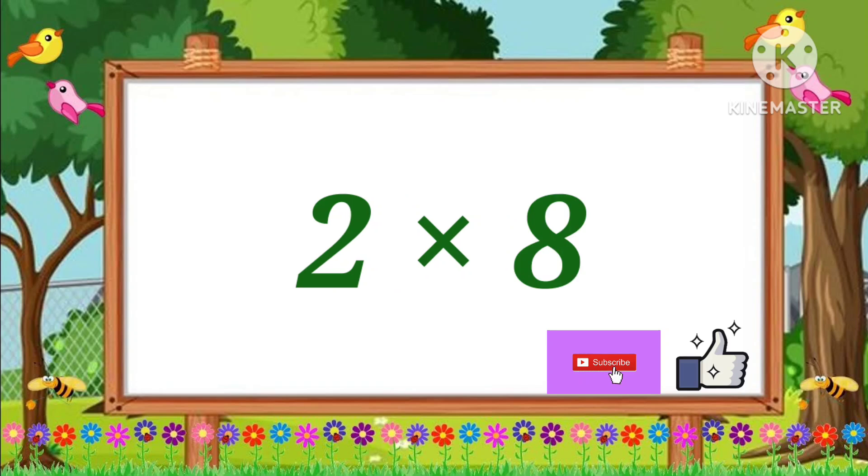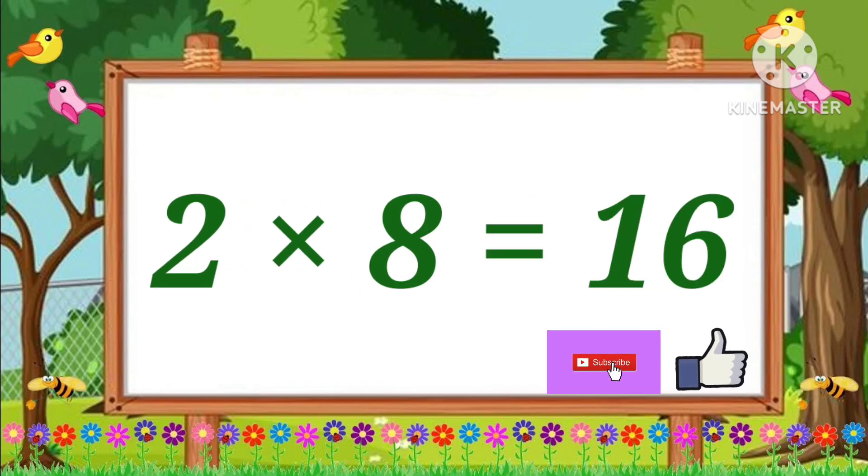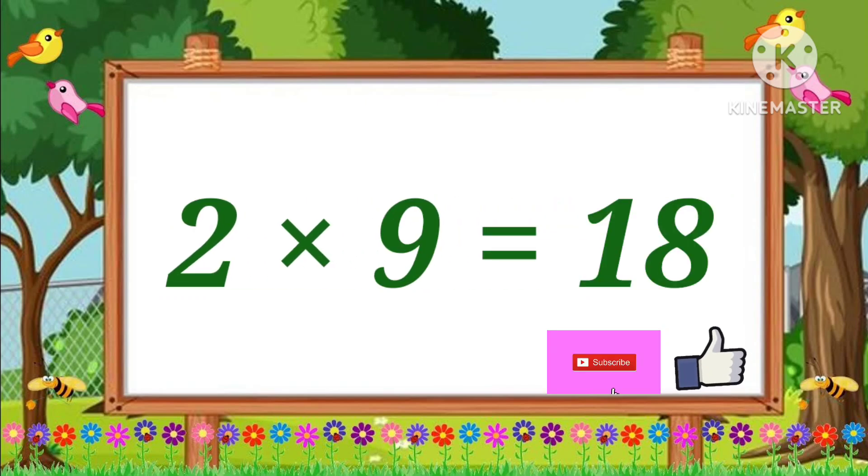Two eights are sixteen. Two eights are sixteen. Two nines are eighteen. Two nines are eighteen.